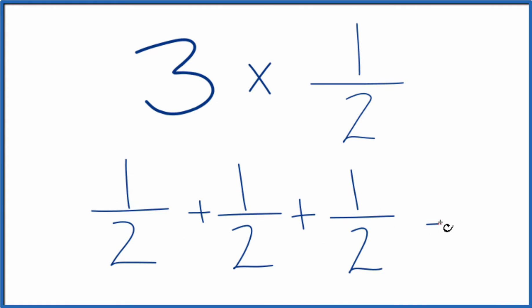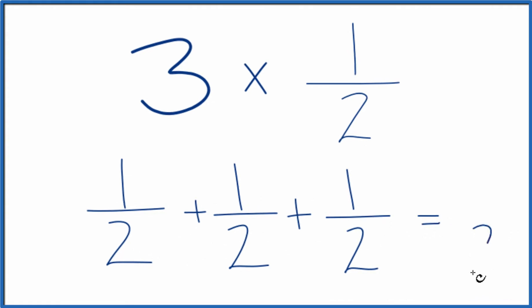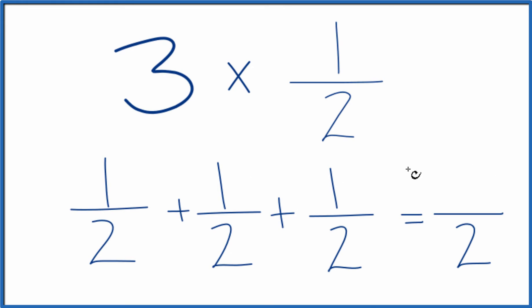When we add fractions, if the denominator is the same, we just keep that the same here, and then we add the numerators. One plus one plus one is three. So we end up with 3 times 1/2 equals 3/2.